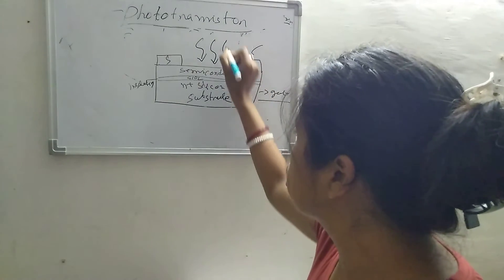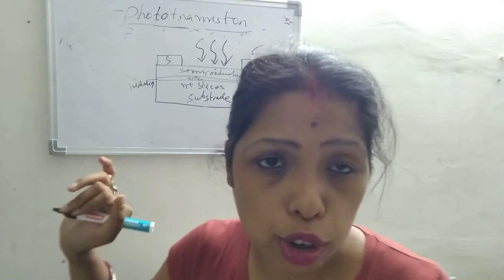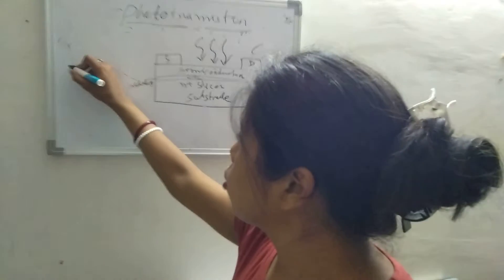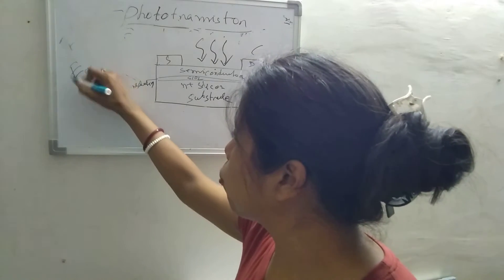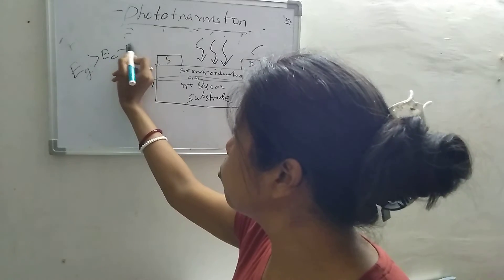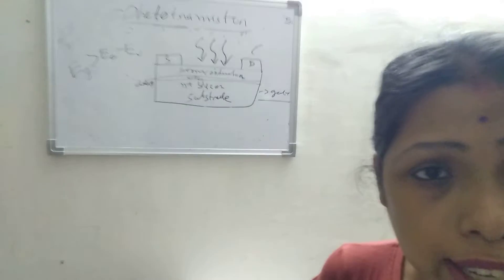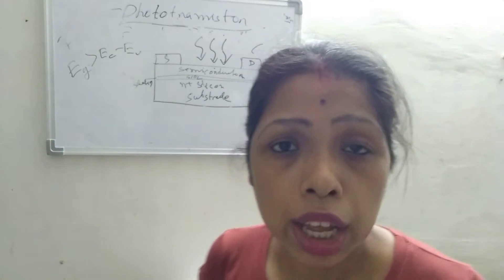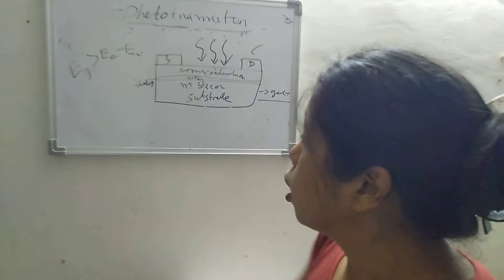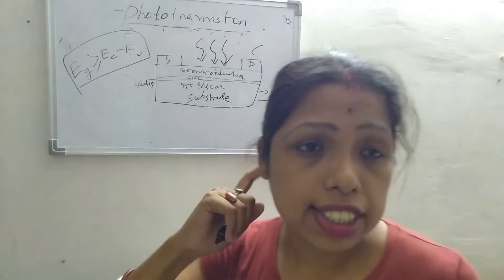When the light falls on the semiconductor, electron-hole pairs will be produced, but there will be one condition. If EG — the energy of the optical light — is greater than or equal to EC minus EV, then we will get the electron-hole pairs and further we will get the photocurrent. Otherwise you will not get any photocurrent or electron-hole pairs. This equation should be satisfied.